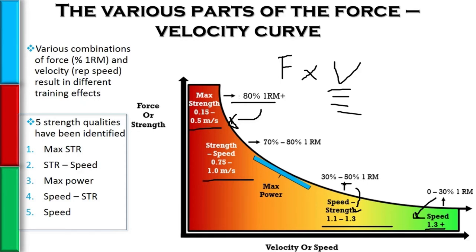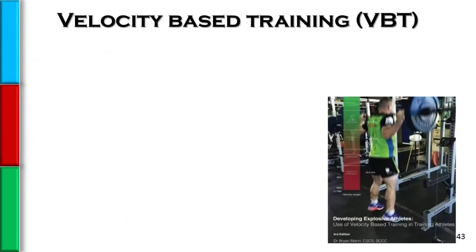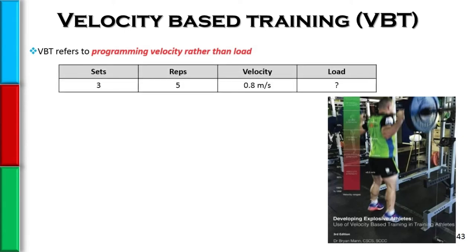Rather than focusing on the load and saying 'do three sets of five with 70% of the 1RM,' I can say 'I want three sets of five — I don't care what weight you use, but you must move it at at least 1.3 meters per second.' This is termed velocity-based training: programming velocity instead of load. For example, instead of three sets of five at 55% 1RM, I want three sets of five at 0.8 meters per second. You figure out the weight — maybe it's 160 pounds — check how fast you're moving it, and if it's not fast enough, drop to 155 to hit the right speed.